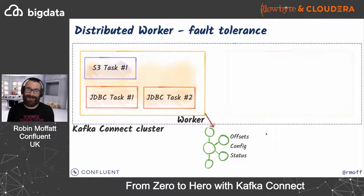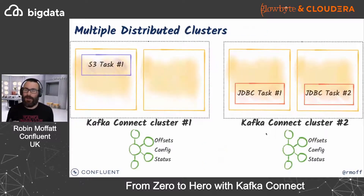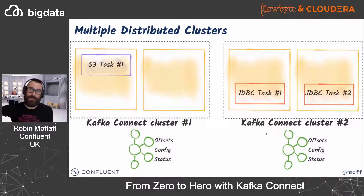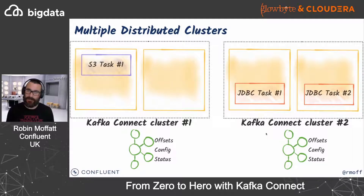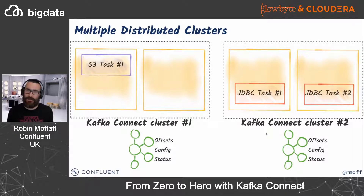You can also partition your distributed workers — you don't have to have one big cluster. You can have one cluster responsible for one team's integration work, another for a different set of technologies that need to connect to a particular network. Different companies have different topologies. The point is: distributed has fault tolerance, uses Kafka for its state store, takes the same effort to set up, and when it comes to configuring it's much easier to start with distributed because that's usually how you're going to run it in production.